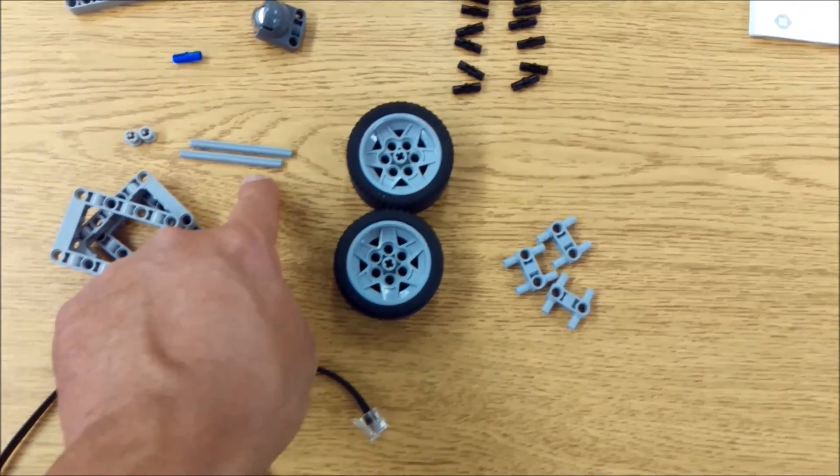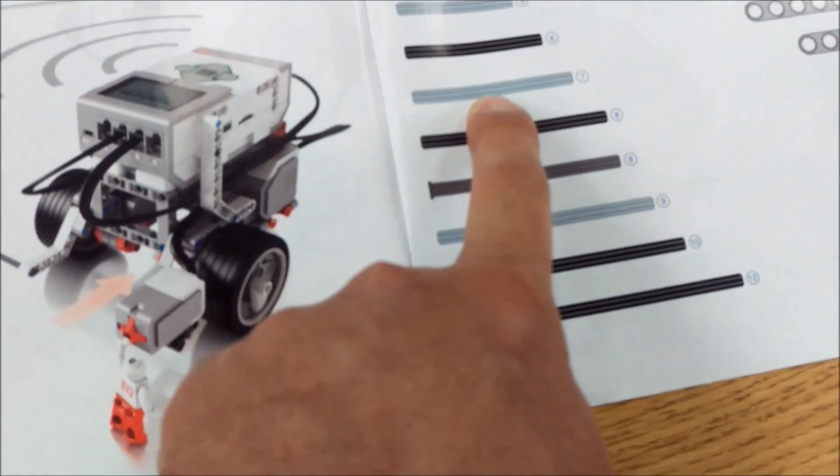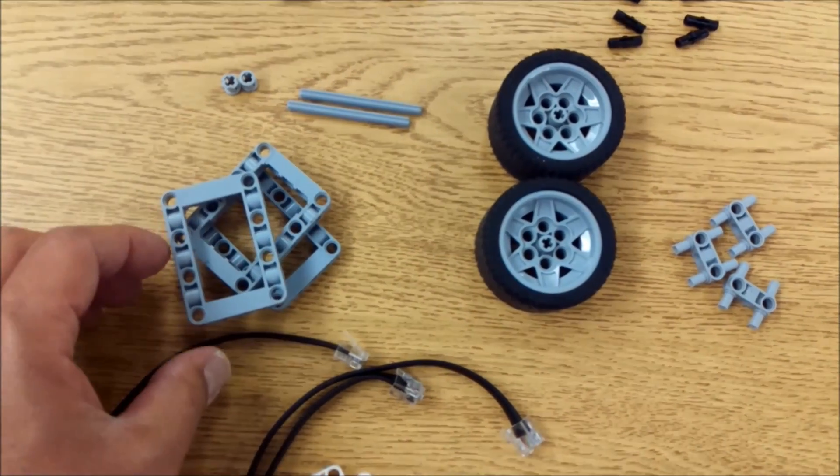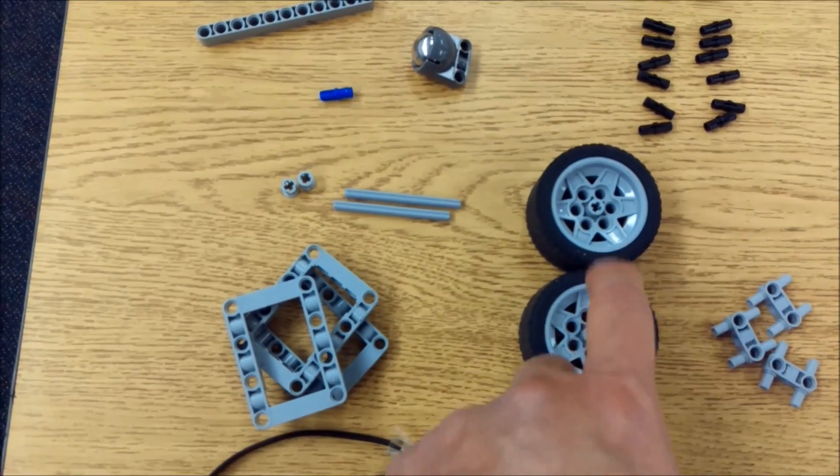These beams are actually your seven beam. Right there, your seven beam. Three of your gray squares. Two of these bushings to go on the ends of the tires.